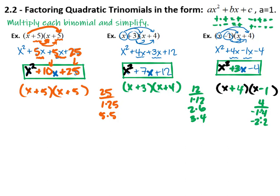What we're looking at today is taking things in this form — these are called quadratic trinomials. Quadratic because we have x squared. Trinomial because there are 3 terms. We're starting with things that look like this and breaking them into these two factors. Let's try a bit more of this.